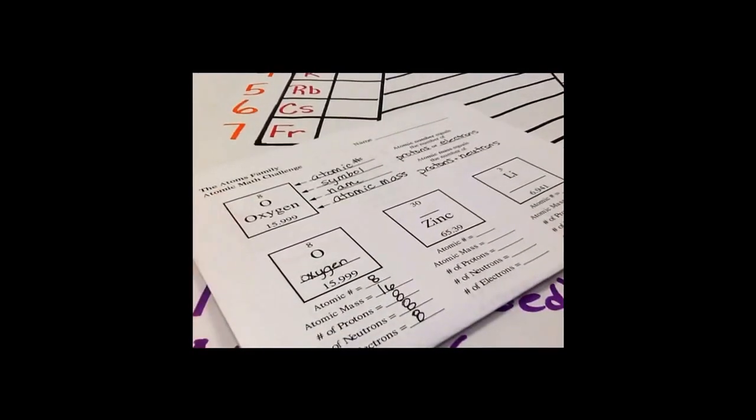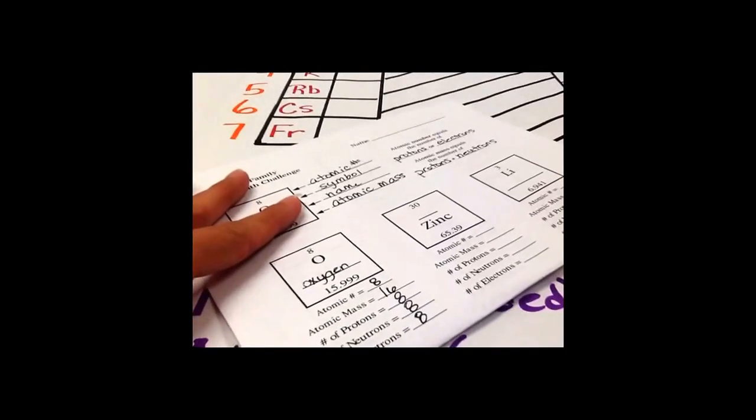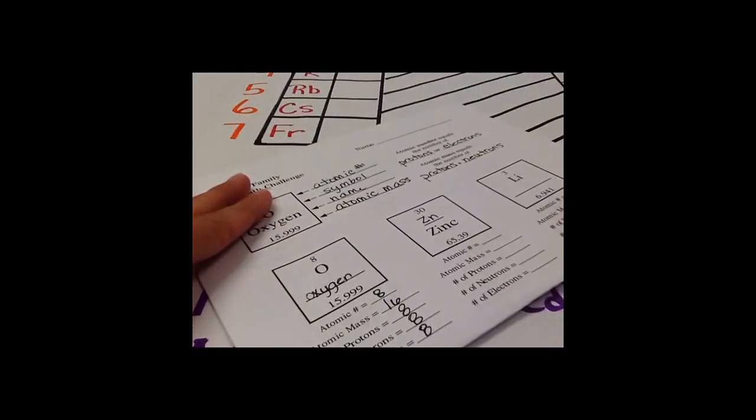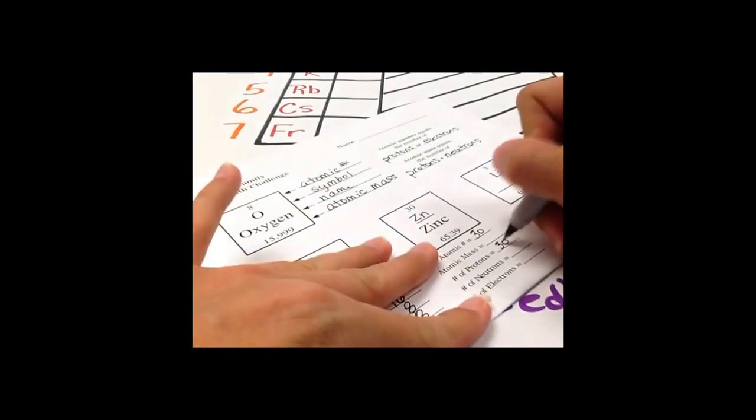Let's look at zinc. Okay, zinc's symbol is Zn. The atomic number is 30, therefore my protons are 30, my electrons are 30.